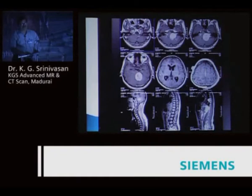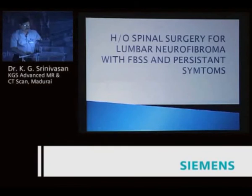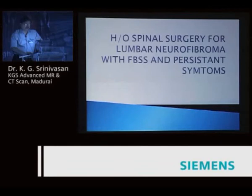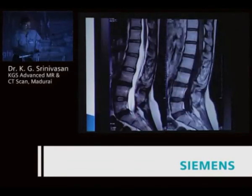Look for bilateral acoustic schwannomas, spinal nerve schwannomas, and sometimes associated meningiomatosis. NF Type 1 is a disease of the nerve; Type 2 is a disease of the nerve sheath. History of spinal surgery for lumbar neurofibroma — a young female developed failed back surgery syndrome with persistent symptoms.